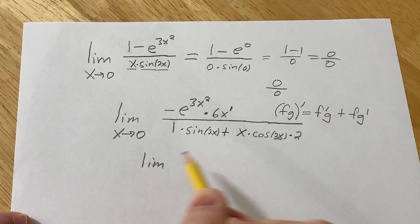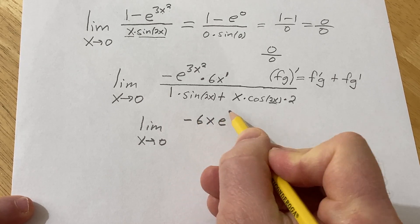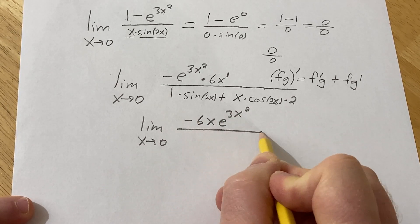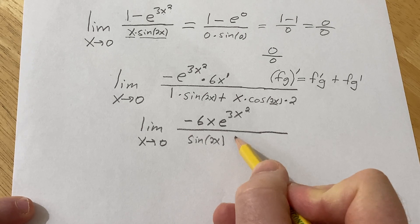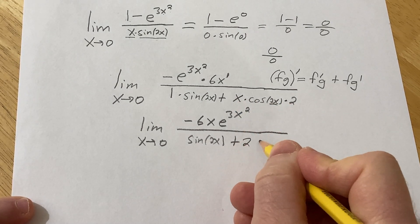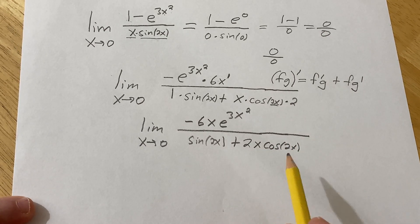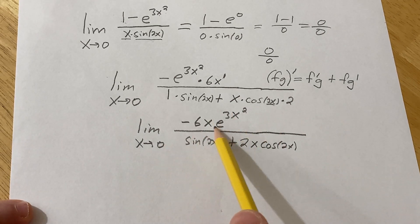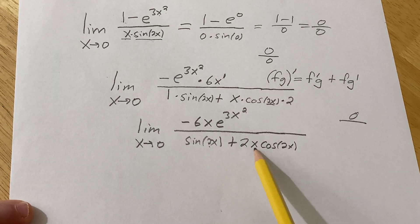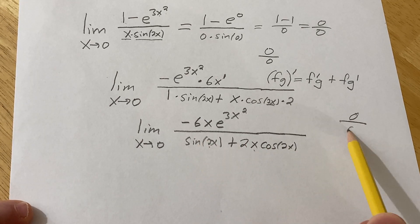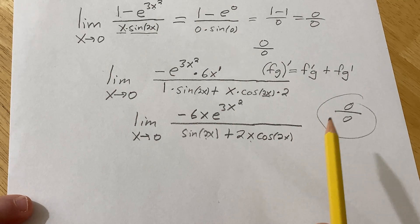Let's write that again clearly. The limit as x approaches 0 of negative 6x e to the 3x squared, all over sine 2x plus 2x cosine 2x. Now we ask: can we plug in 0? When we plug in 0, the numerator has a factor of x so the top is 0. On the bottom, sine of 0 is 0 and there's an x in the second term, so it's also 0. So we have the indeterminate form again and we apply L'Hôpital's rule once more.